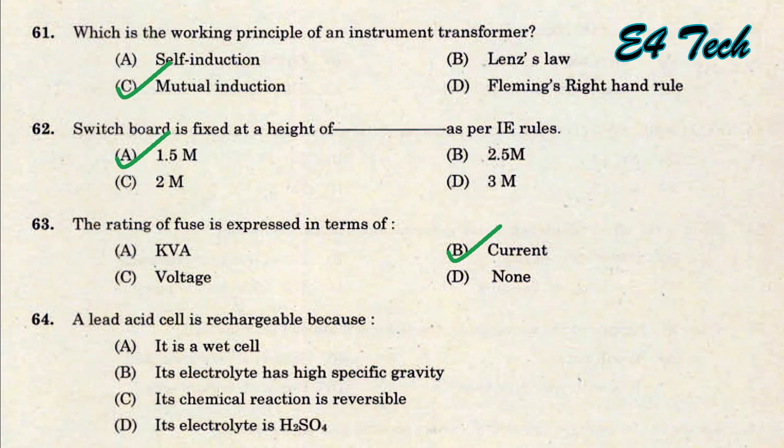A lead acid cell is rechargeable because its chemical reaction is reversible. Other options include: it is a wet cell, its electrolyte has high specific gravity, and its electrolyte is sulfuric acid (H2SO4). Obviously, the correct reason is that the chemical reaction is reversible. That is option C.